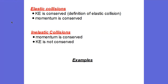We give these two different types of collisions names. If kinetic energy is conserved, we call that collision an elastic collision. If it is not conserved, we call it an inelastic collision. Notice that in both types of collisions, momentum is always conserved. The elastic collision by definition is one in which kinetic energy is conserved, and all other types of collisions where kinetic energy is not conserved, we call inelastic.